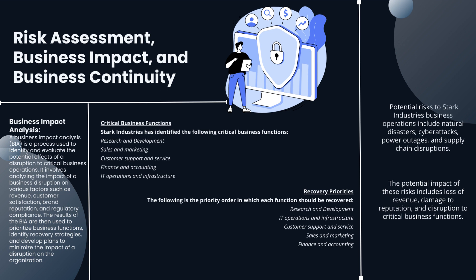Business Impact Analysis (BIA) is a process used to identify and evaluate the potential effects of a disruption to critical business operations. It involves an analysis of various business functions to identify what is critical and what could happen to the business if a risk were realized. The critical business functions for Stark Industries were identified as: research and development, sales and marketing, customer support and service, finance and accounting, and IT operations and infrastructure. The recovery priorities in order are: research and development, IT operations and infrastructure, customer support and service, sales and marketing, and finally finance and accounting.